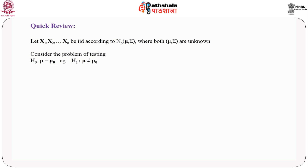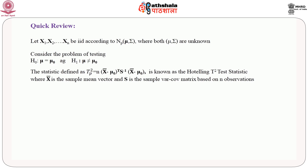Suppose we have the problem of testing the hypothesis H₀: mu = mu₀, where mu₀ is some specified vector, versus the alternative H₁: mu ≠ mu₀. The statistic defined as n times (x̄ - mu₀)ᵀ S⁻¹ (x̄ - mu₀) is known as the Hotelling T-squared test statistic, where x̄ is the sample mean vector and S is the sample variance-covariance matrix based on n observations.